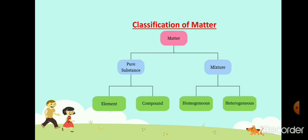Now we will learn about the classification of matter. We have already studied that matter can be classified as solid, liquid, and gas on the basis of its physical state. But on the basis of composition, matter can be classified as pure substances and mixtures. Pure substances can be further classified as element and compound, whereas mixtures can be further classified as homogeneous and heterogeneous.